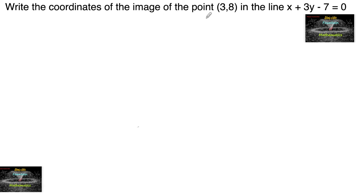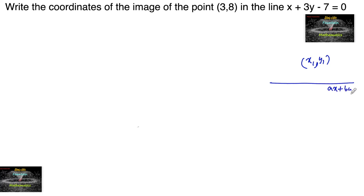Write the coordinates of the image of the point under the line x plus 3y minus 7 equals to 0. Since we know that the image of the point x1 comma y1 under the line ax plus by plus c equals to 0, let us consider the image is Q(alpha, beta).